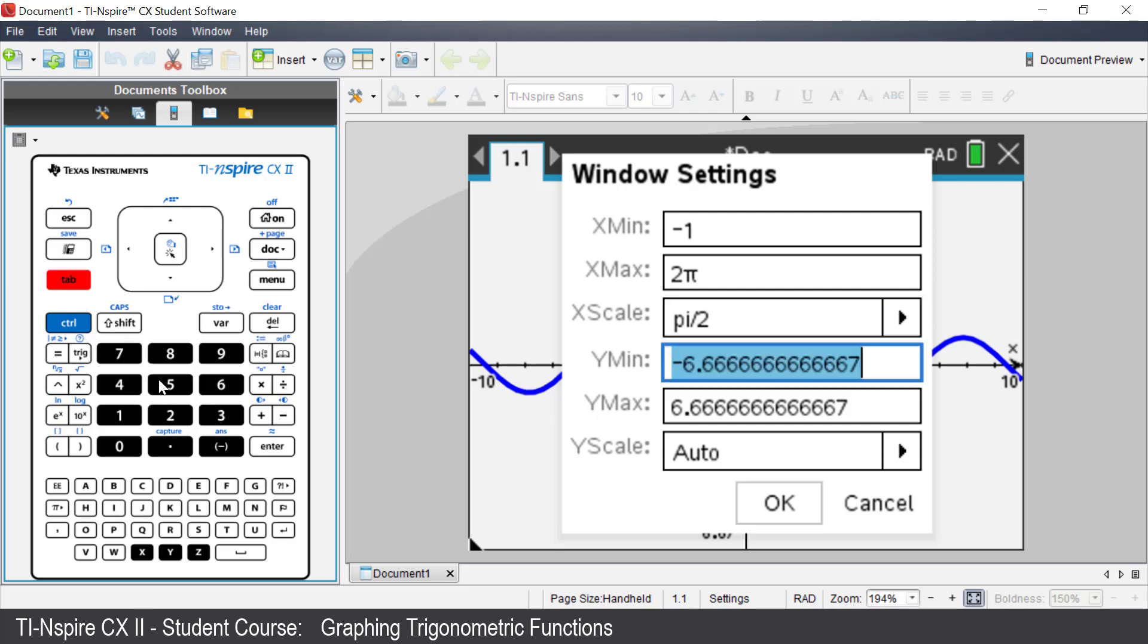With the y-axis negative 4 to 4 with a scale of 1, move to OK and press Enter.